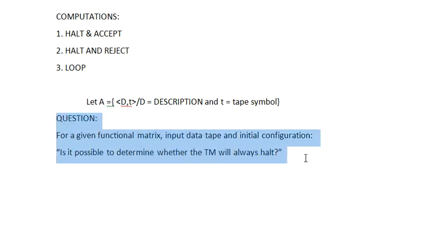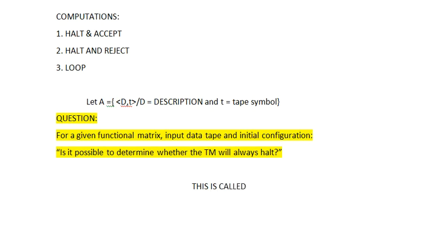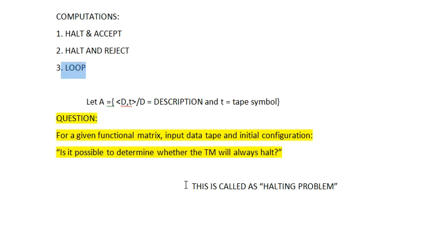So the question is: for a given functional matrix and input data tape in its initial configuration, is it always possible to determine whether that Turing machine will always halt? Since we already know there is a computation called loop that will never halt, this question defines what is called the halting problem. It means that for any given functional matrix and input data tape, it is not always possible that the Turing machine will halt — it might go into an infinite loop and never stop.